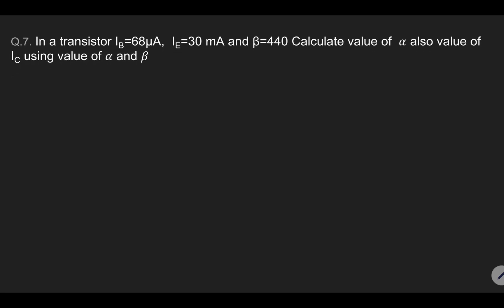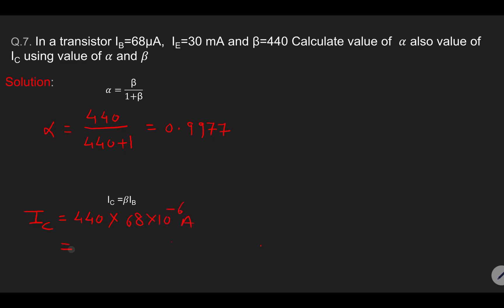In the next transistor question, base current and emitter current are given, and we need to calculate alpha and then collector current. Alpha equals beta upon 1 plus beta, so alpha equals 440 divided by 441, giving 0.9977. For collector current, IC equals beta times IB, so IC equals 440 multiplied by 68 into 10 to the minus 6 ampere, and the final answer is 29.92 milliampere.